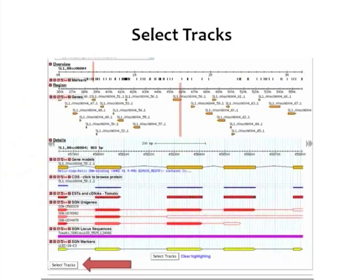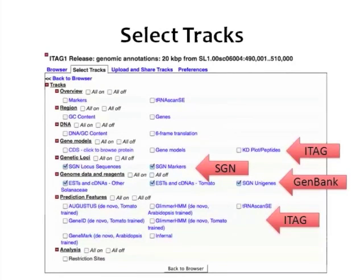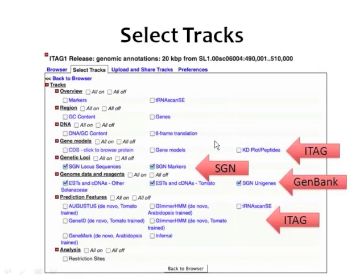We can select what kind of data we want to see by going to Select Tracks at the bottom of our screen. This is what the Select Tracks screen looks like — you can turn the overview on or off, choose which gene models you want displayed from the annotation group, view genetic loci from SGN, ESTs from GenBank, and other prediction features from the annotation group.